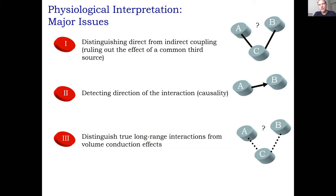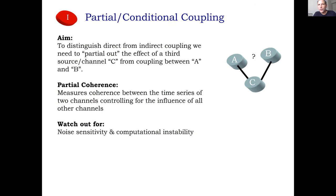To distinguish direct from indirect coupling, one approach is partial coherence — partialing out the contribution of a third channel C when examining coupling between A and B. If the interaction between A and B disappears after accounting for C, it suggests C was the common driver. This is one of several available metrics for this purpose.